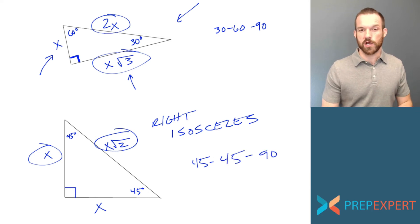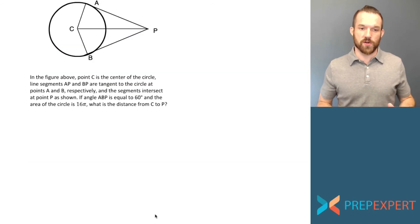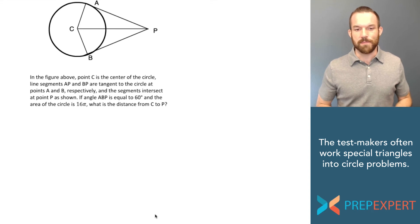Now let's put them to work on a practice problem. Here's a good one for us to get started on. In the figure above, point C is the center of the circle. Line segments AP and BP are tangent to the circle at points A and B respectively, and the segments intersect at point P as shown. If angle ABP is equal to 60 degrees and the area of the circle is 16 pi, what is the distance from C to P?